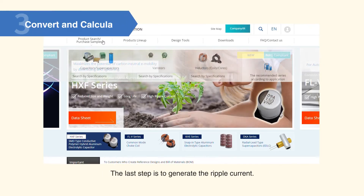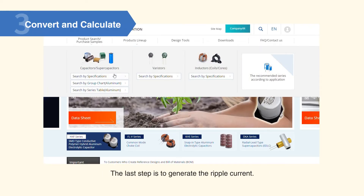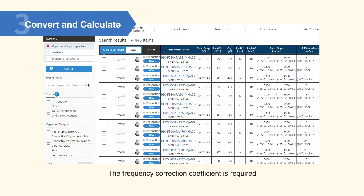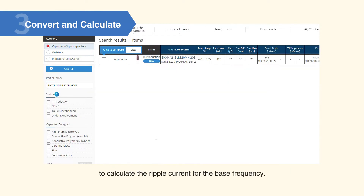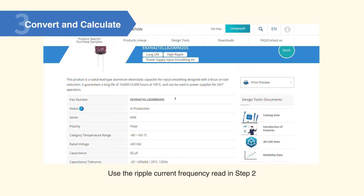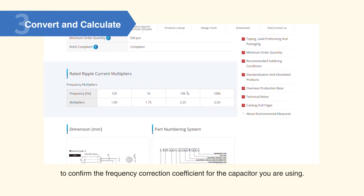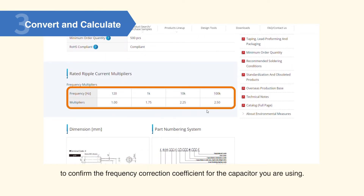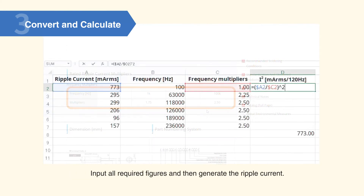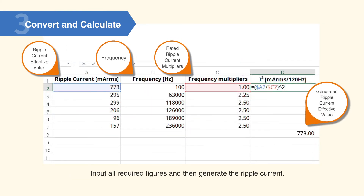The last step is to generate the ripple current. The frequency correction coefficient is required to calculate the ripple current for the base frequency. Use the ripple current frequency read in step 2 to confirm the frequency correction coefficient for the capacitor you're using. Input all required figures and then generate the ripple current.